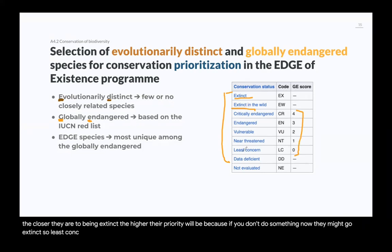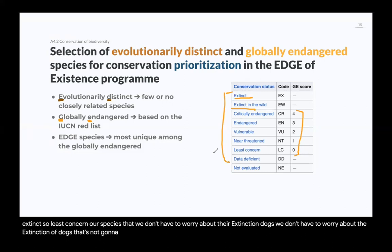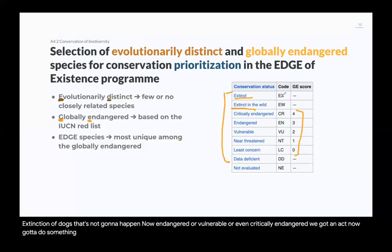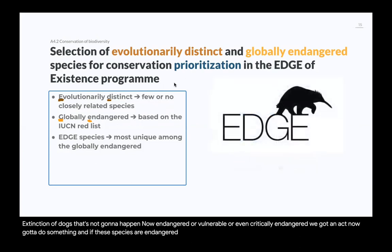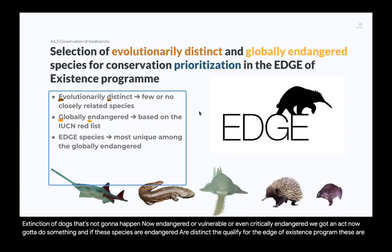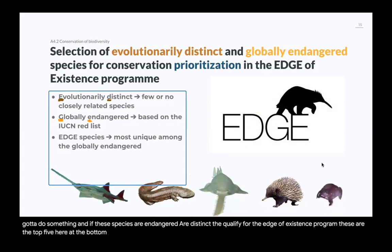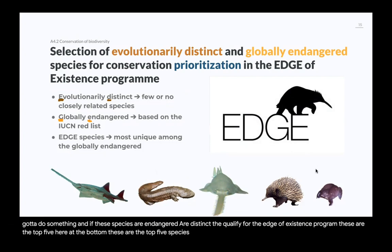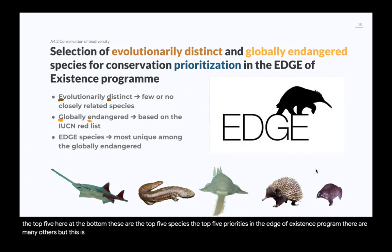Least concern species — like dogs — we don't have to worry about their extinction. But endangered, vulnerable, or critically endangered species: we have to act now. If these species are endangered and evolutionarily distinct, they qualify for the EDGE of Existence program. The top five priorities in the EDGE of Existence program are shown here for illustration — you do not need to know their names.